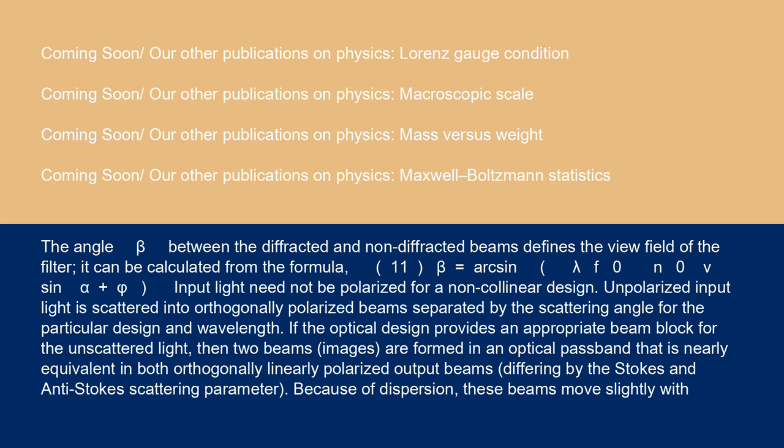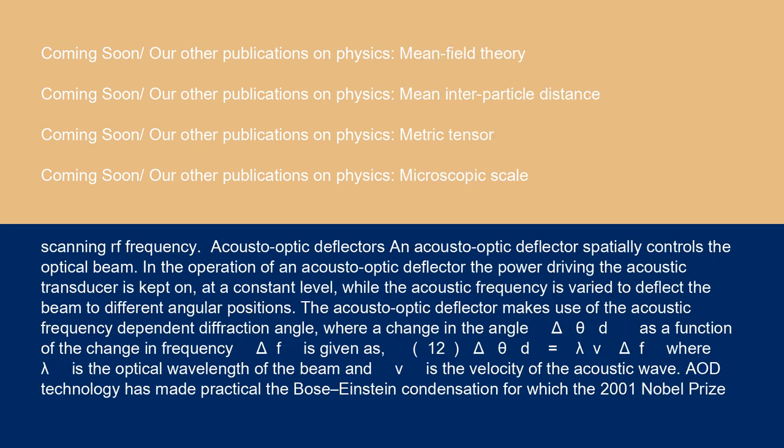Input light need not be polarized for a non-collinear design. Unpolarized input light is scattered into orthogonally polarized beams separated by the scattering angle for the particular design and wavelength. If the optical design provides an appropriate beam block for the unscattered light, then two beams (images) are formed in an optical passband that is nearly equivalent in both orthogonally linearly polarized output beams, differing by the Stokes and anti-Stokes scattering parameter. Because of dispersion, these beams move slightly with scanning RF frequency.